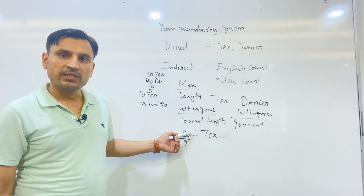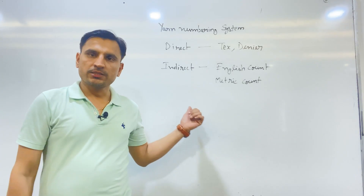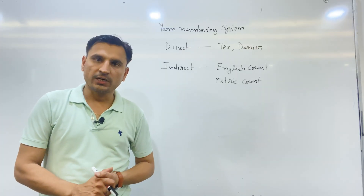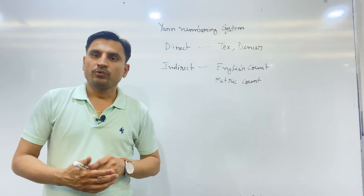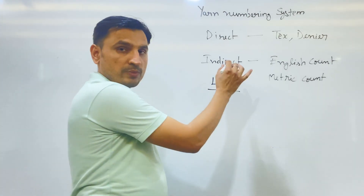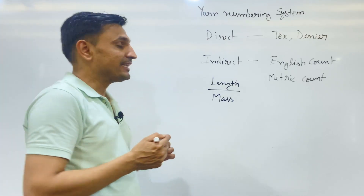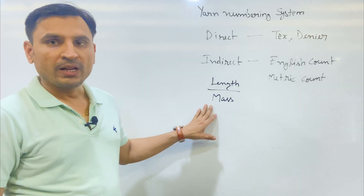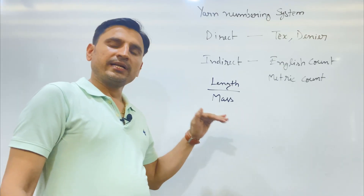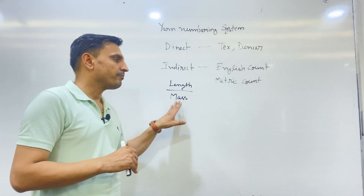In case of tex, we weigh 1000 meter length in grams; in case of denier, we weigh 9000 meter length in grams. Now let us talk about the second system — indirect yarn numbering system — which includes English count, metric count, worsted count, and others. In this system we use the principle of length per unit mass. In the direct system the length was fixed and the mass varied, but in the indirect system the mass is fixed and the length varies depending upon the coarseness or fineness of the yarn.